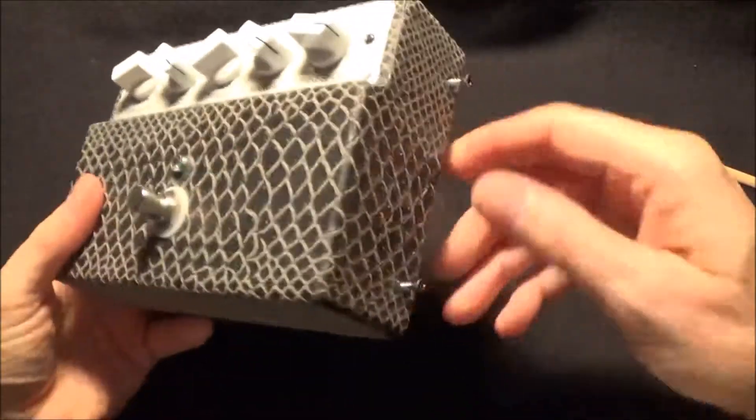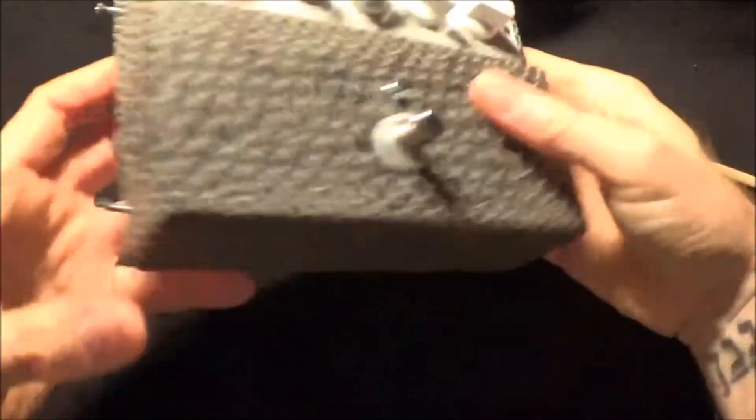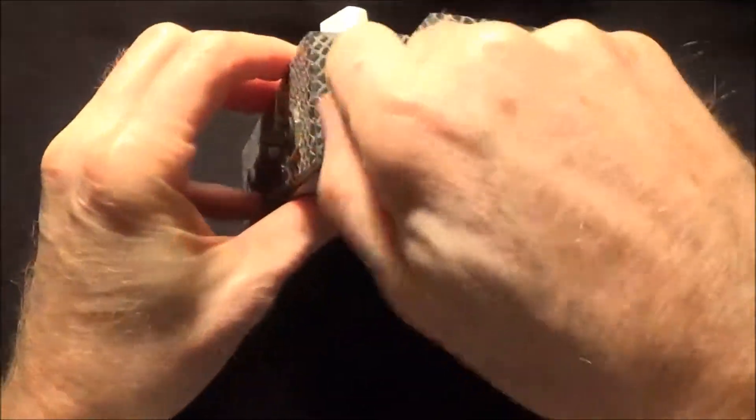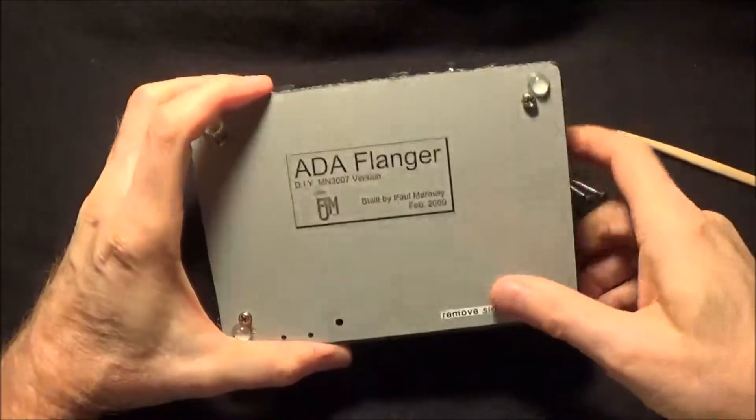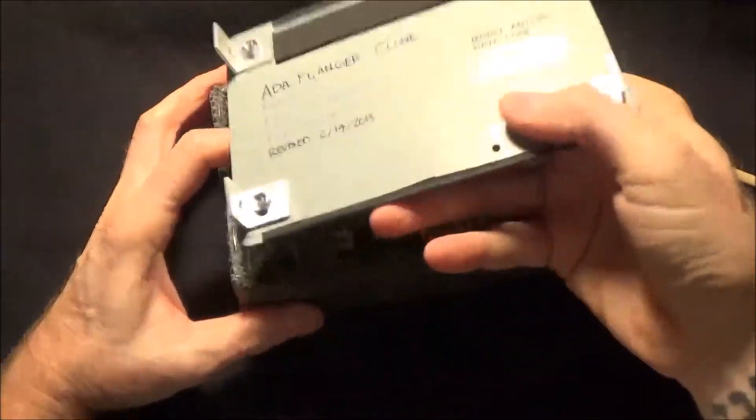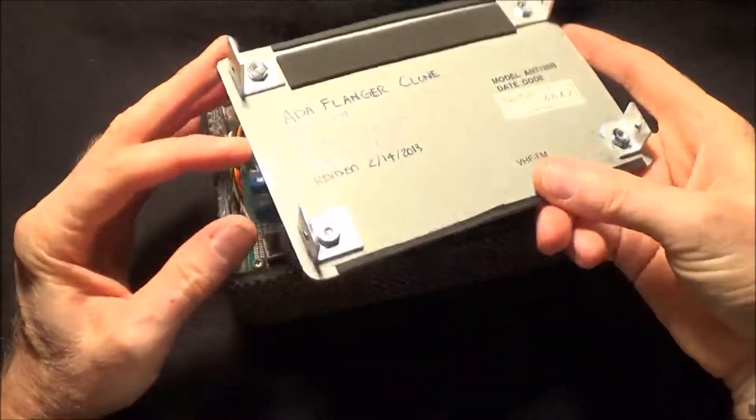Now to get the bottom off, you have to take these screws out the sides and the bottom will come off. This is actually a metal bottom that I made from, I think it was like an antenna or something, a TV antenna.